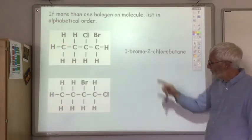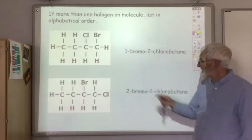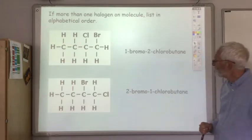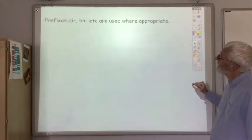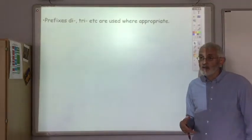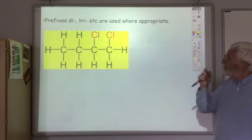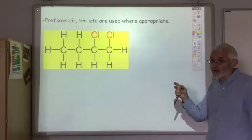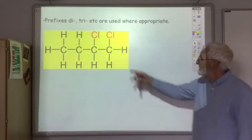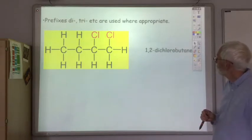For example, this one where the bromine and chlorine are swapped around — we still state where the bromine is first even though it's on the second carbon and the chlorine is on the first, so it's 2-bromo-1-chlorobutane. If you've got more than one bromine then you'd say di-bromo or tri-bromo. So for example here we've got two chlorines, so it's dichlorobutane, with one on the first carbon and one on the second carbon — so it's 1,2-dichlorobutane.